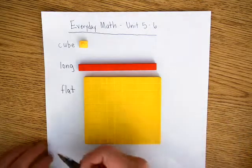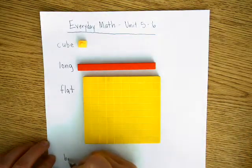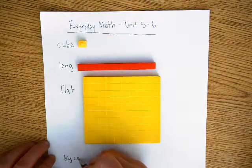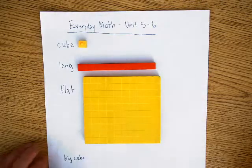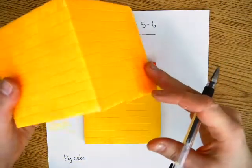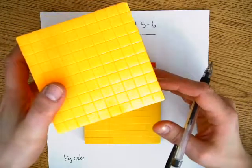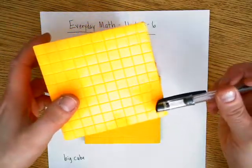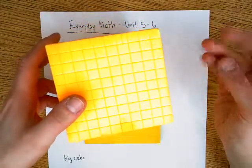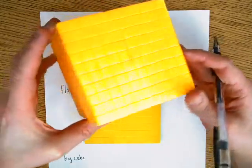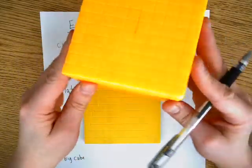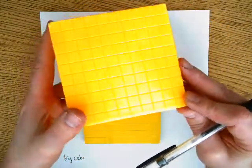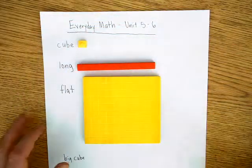And then we have a big cube. And the big cube is this here, and it's actually ten flats. Okay, so if you counted, there would be ten up the side here, and it's ten flats tall, or one thousand cubes, okay, that would go into this big cube.